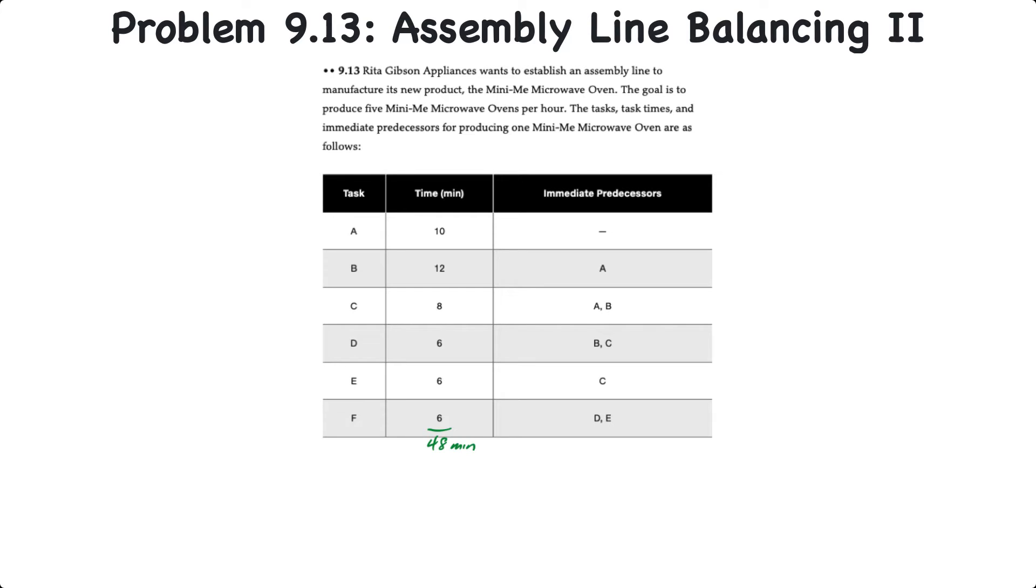We'll also demonstrate how to calculate the theoretical efficiency of the balanced line. This question relates to problem 9.13 in your text. Rita Gibson Appliances wants to establish an assembly line to manufacture its new product, a particular microwave oven. The goal is to produce five ovens per hour. The tasks, the times, and immediate predecessors for producing one microwave oven are in the table below.